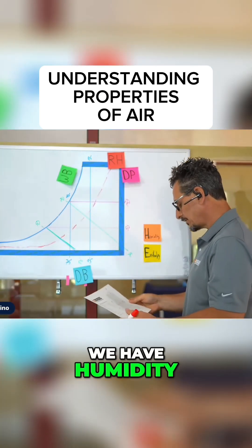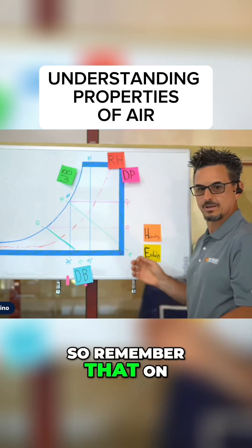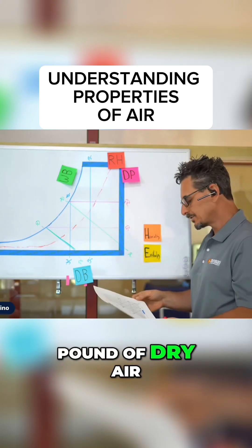Next, we have humidity. We're going to draw—remember that on this chart, it's in grains per pound of dry air.